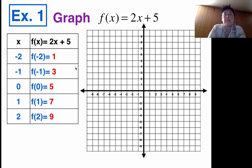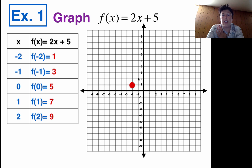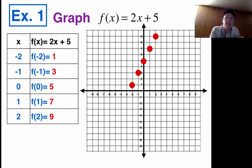When you're ready, we're going to plot these points. Starting with (negative 2, 1): on my graph I go to negative 2 on the x-axis and up to 1 — that's my first point. Then (negative 1, 3): go to negative 1 and up to 3. Then (0, 5): 0 is in the middle but 5 is way up here. Then (1, 7): go over to 1 and up to 7. And (2, 9): go over to 2, up to 9. And lo and behold, it looks linear — definitely looks like a straight line.